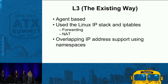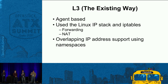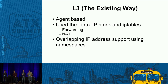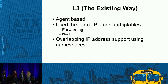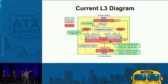Another painful point for Neutron's reference implementation is L3. It's agent-based, which has implications for the RabbitMQ plane, and you're back to using the Linux IP stack and iptables in different namespaces for forwarding and NAT. You can do overlapping IP addresses, but you end up with a lot of complex stuff to handle what you're trying to do, and from an operational point of view it's often difficult to figure out where things went wrong.